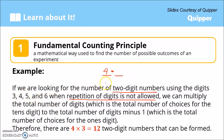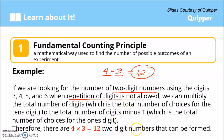Then we multiply that by the number of choices minus one, because repetition is not allowed. Whatever number you used for the first digit, you can't repeat it for the second digit, so we have three choices for the second digit. Four times three equals twelve — meaning there are twelve possible two-digit numbers that can be formed using 3, 4, 5, and 6 when repetition of digits is not allowed.